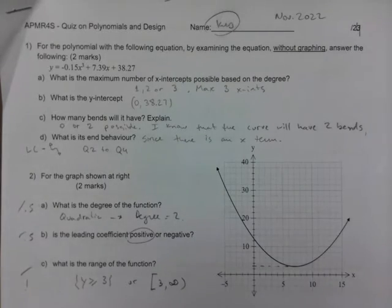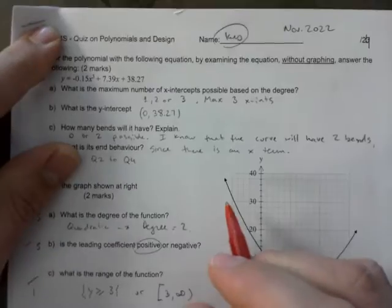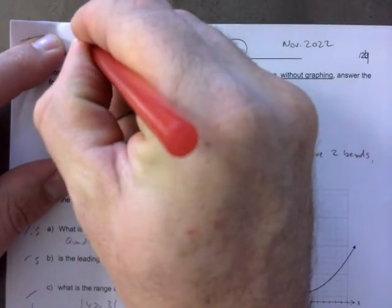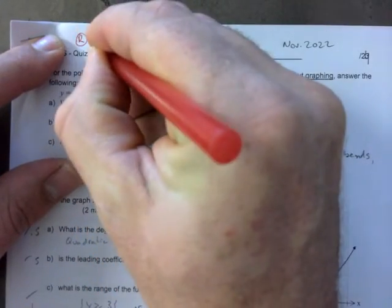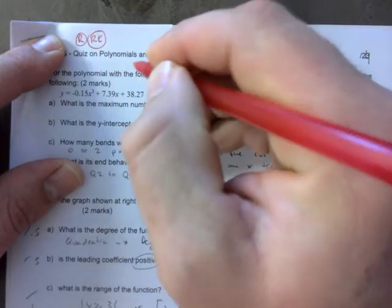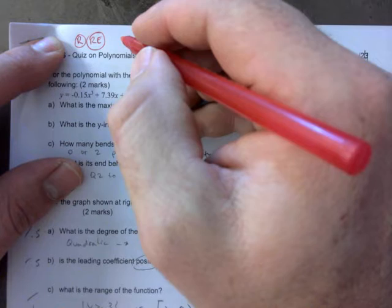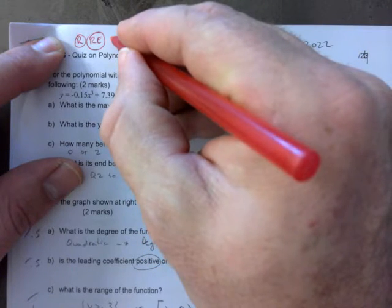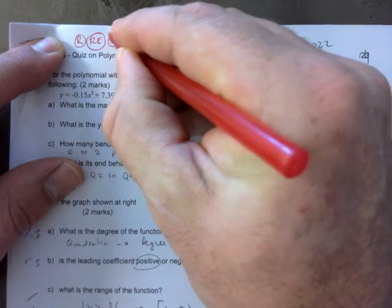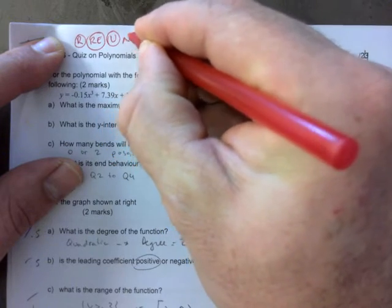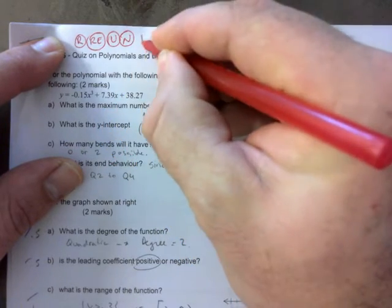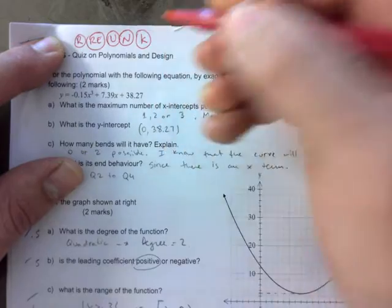Common errors are at the top of this. If you see 'R,' that's for rounding. 'RE' is rounding early, like when you're supposed to actually do four decimals and you're using two. There's 'U' for units, 'N' for notation, and 'K' for missing keystrokes.